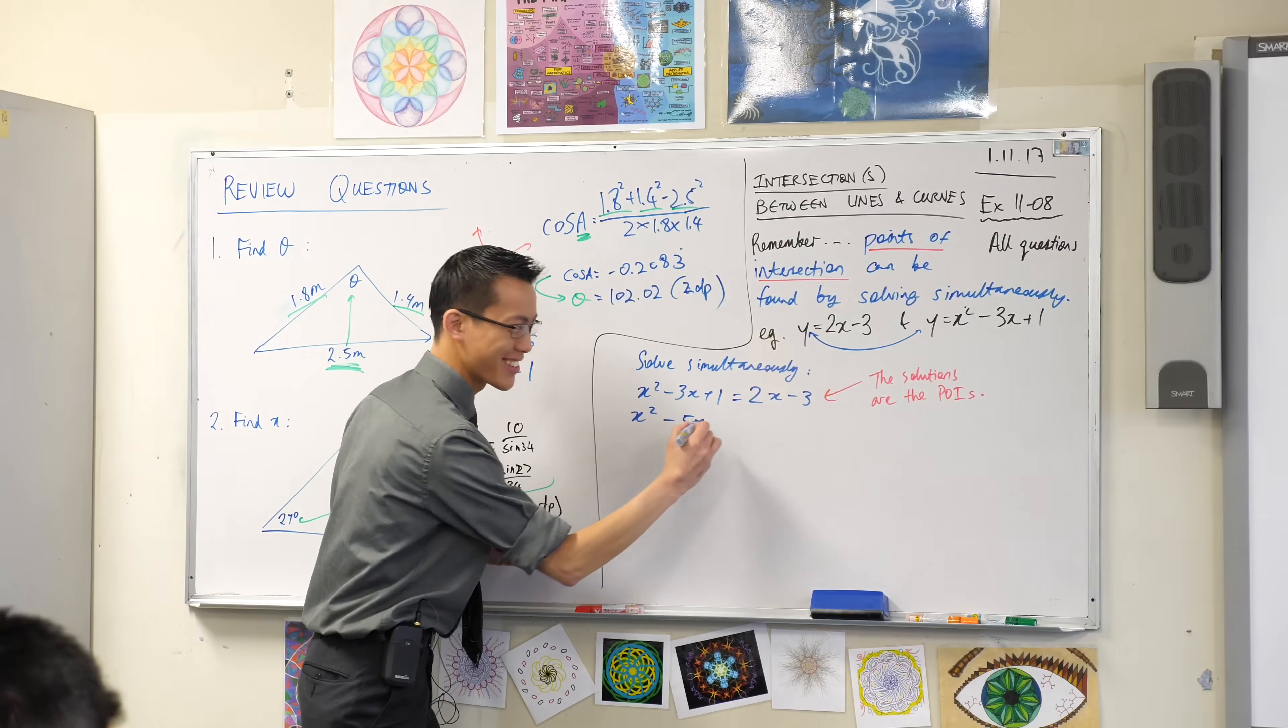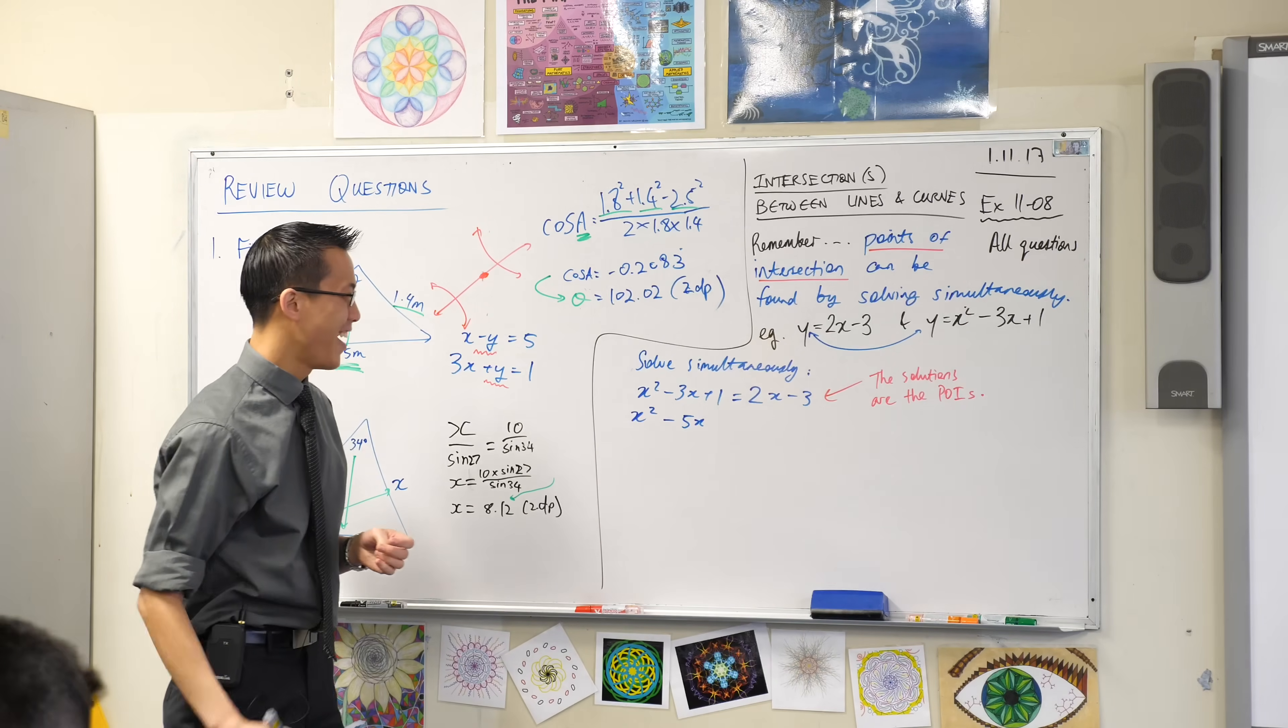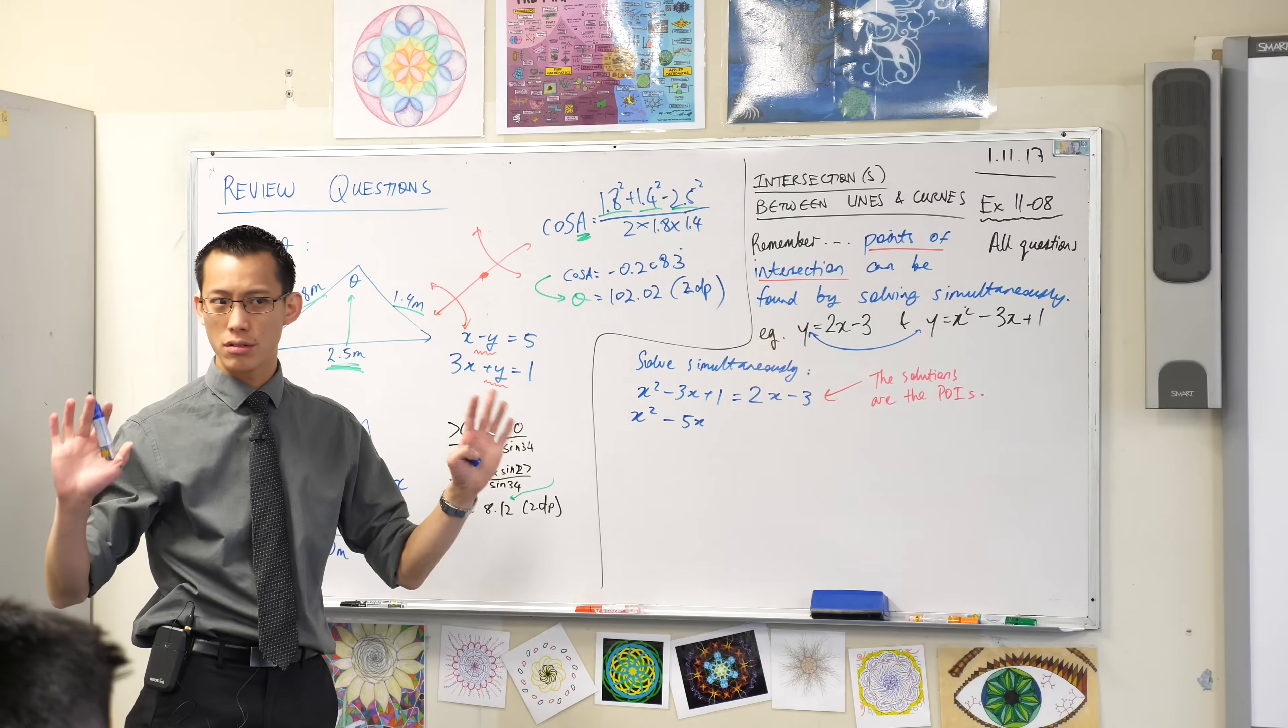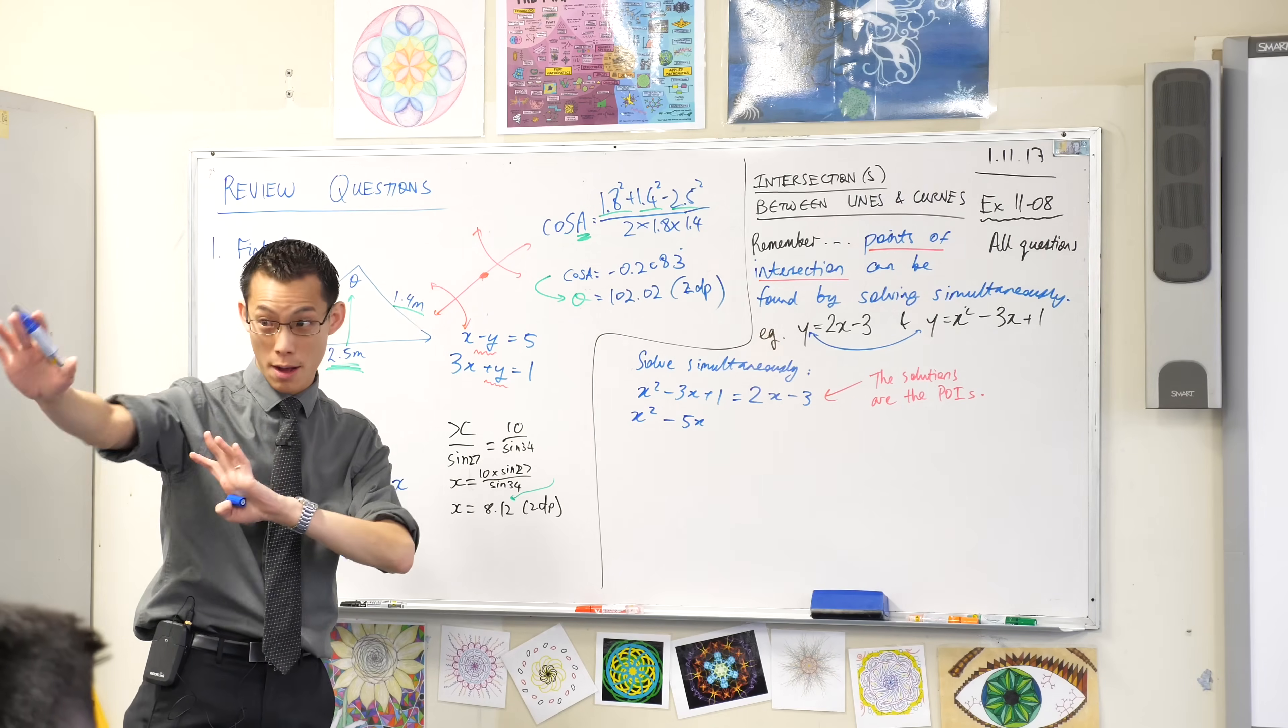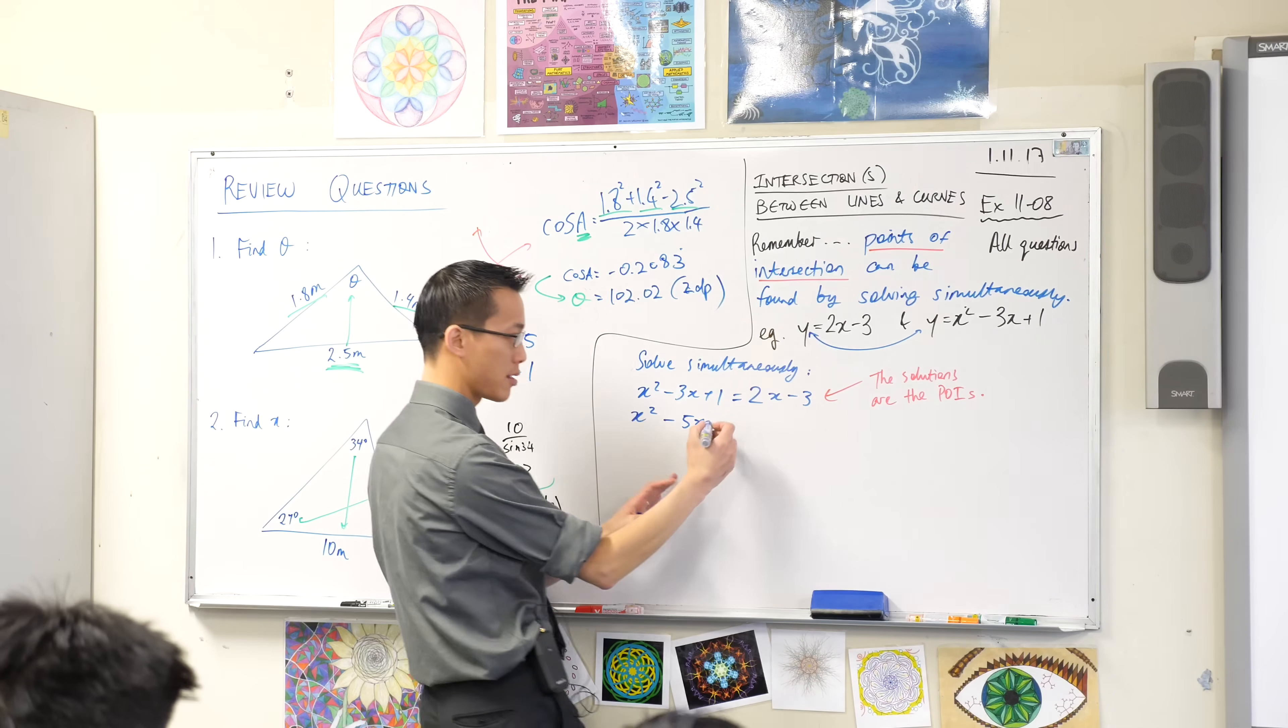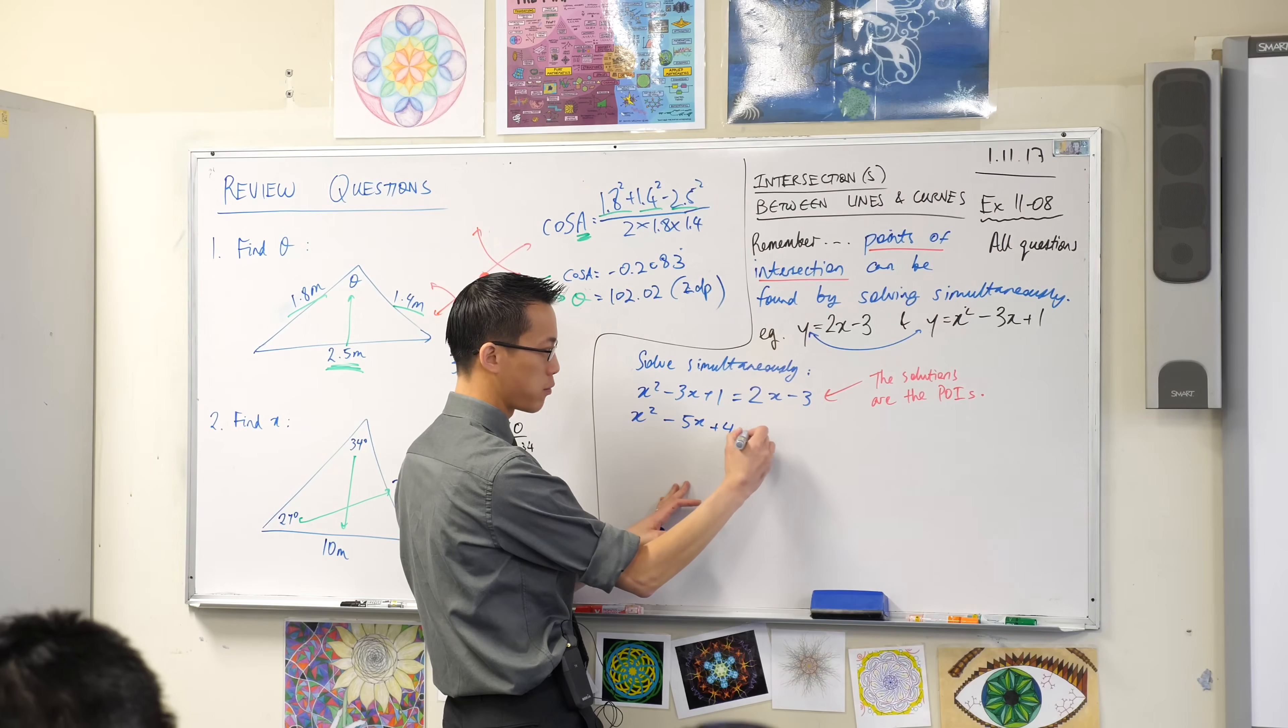Minus 5x? Subtracting 2x. What am I going to do with the constants? What will I do? I'll add 3 on both sides, which gives me a plus 4.